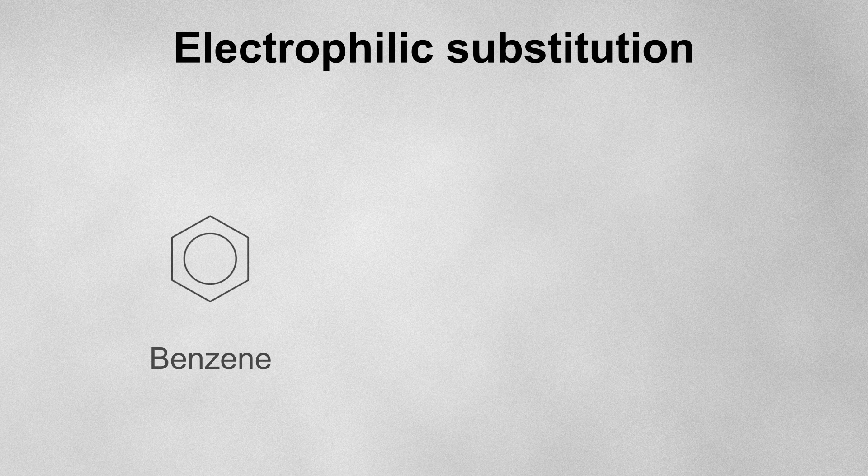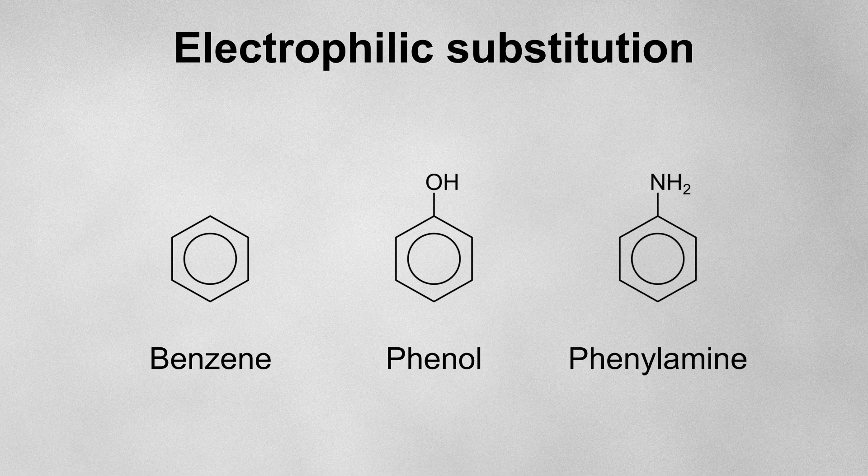Electrophilic substitution is a mechanism that is observed at aromatic rings like benzene, phenol and phenylamine. An electrophile is defined as an electron pair acceptor.